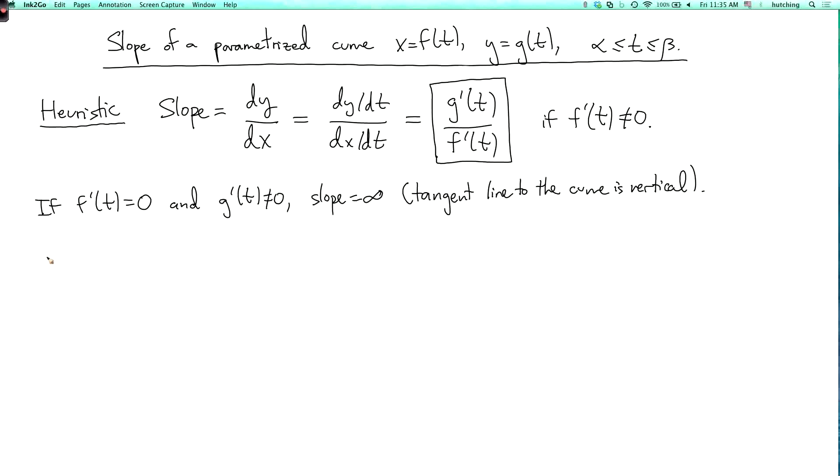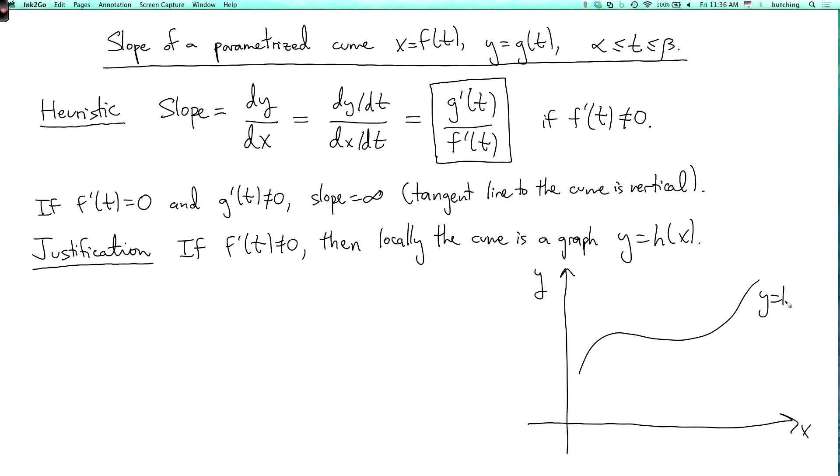Anyway, here's a more precise way of justifying this formula. The justification is that if f prime of t is not zero, then at least locally, the curve is a graph y equals h of x for some function h. So here's the picture. Where we're actually going in the curve is on this curve y equals h of x. So here's the point, x of t comma y of t.